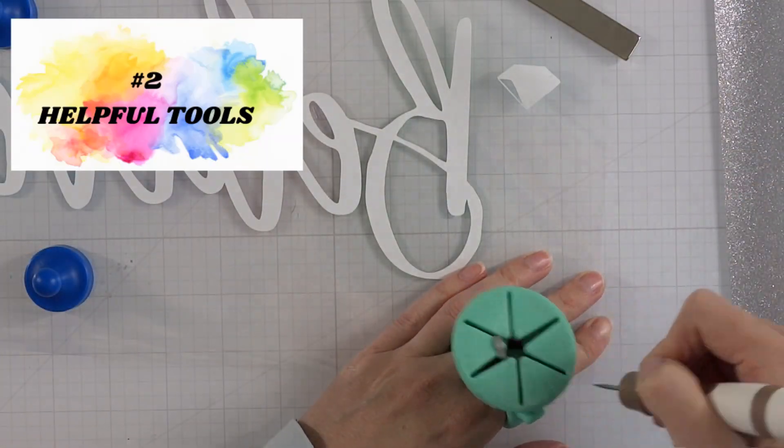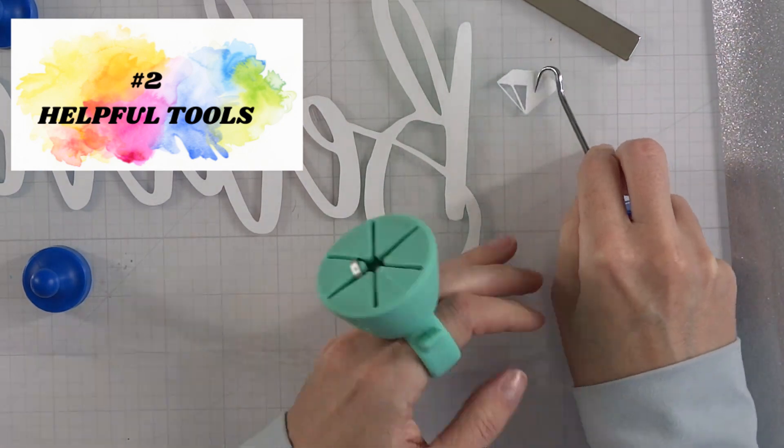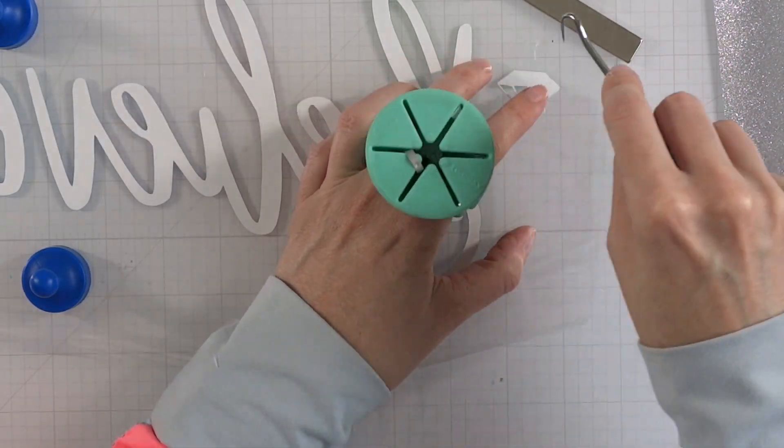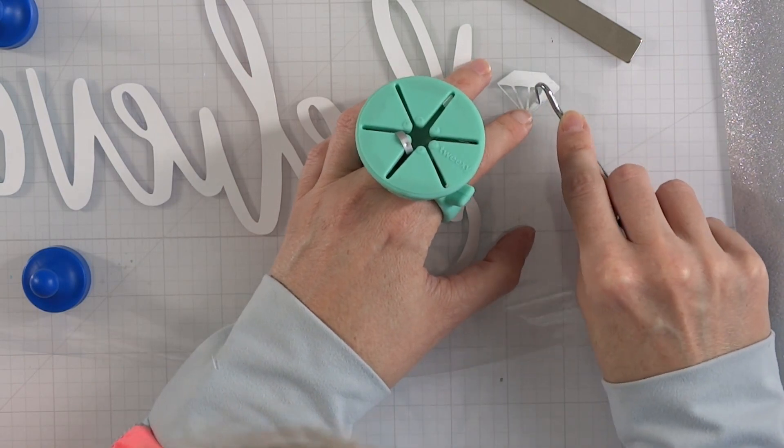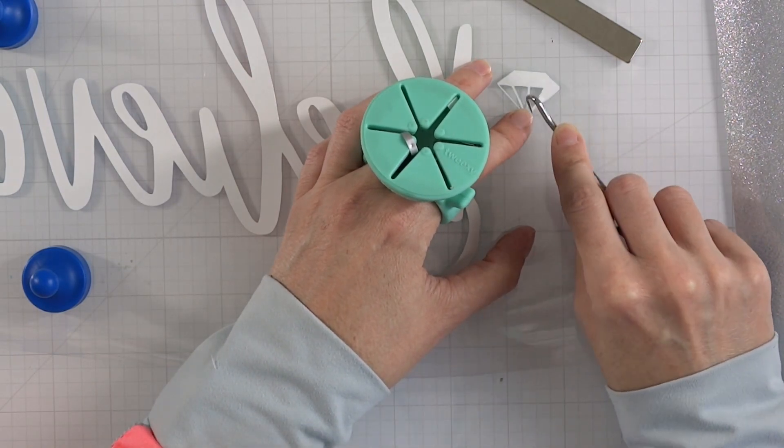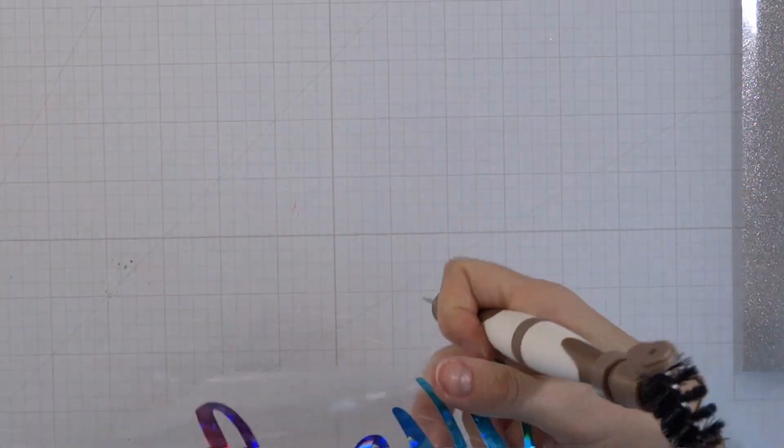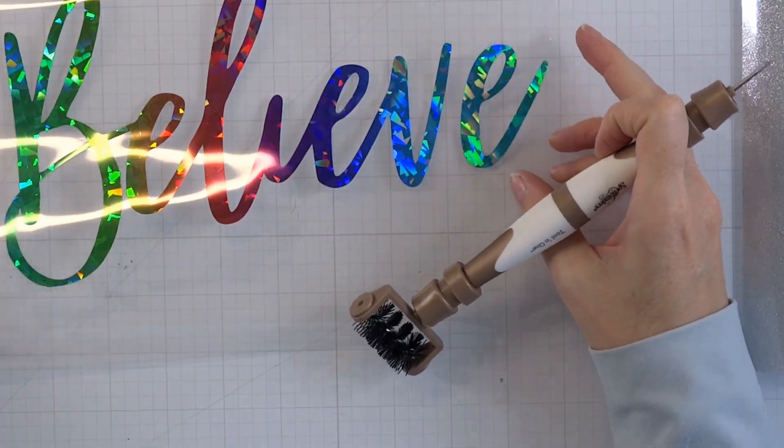I have this little tool here on my fingers, a silicone holder, and it's so convenient to pull off these little pieces and put them right in there. I'm using a tool for the Cricut machine, but you can also use a poker tool or anything sharp to pick up those pieces.